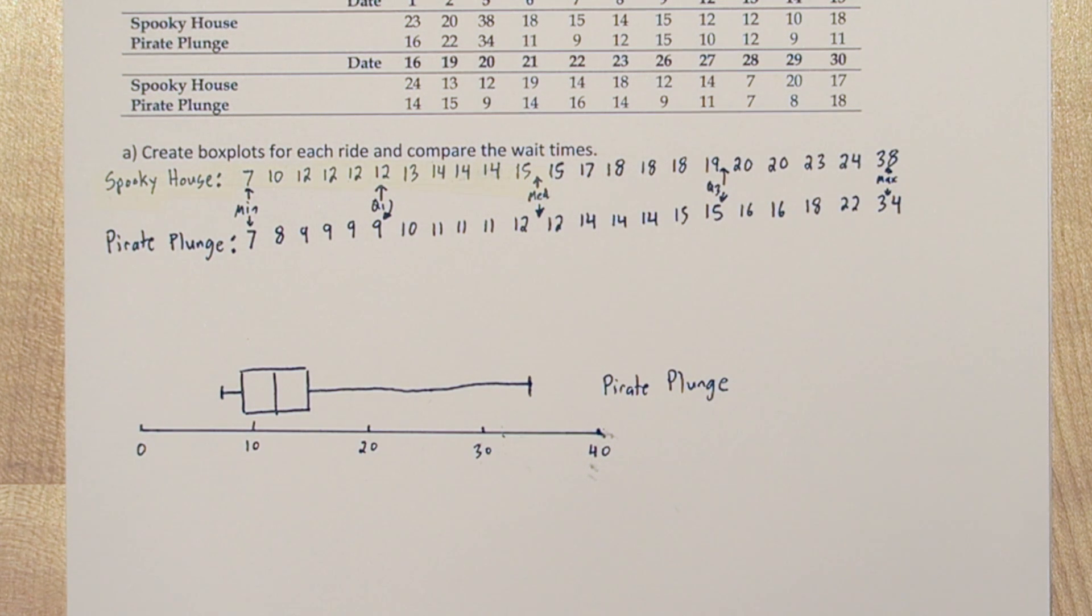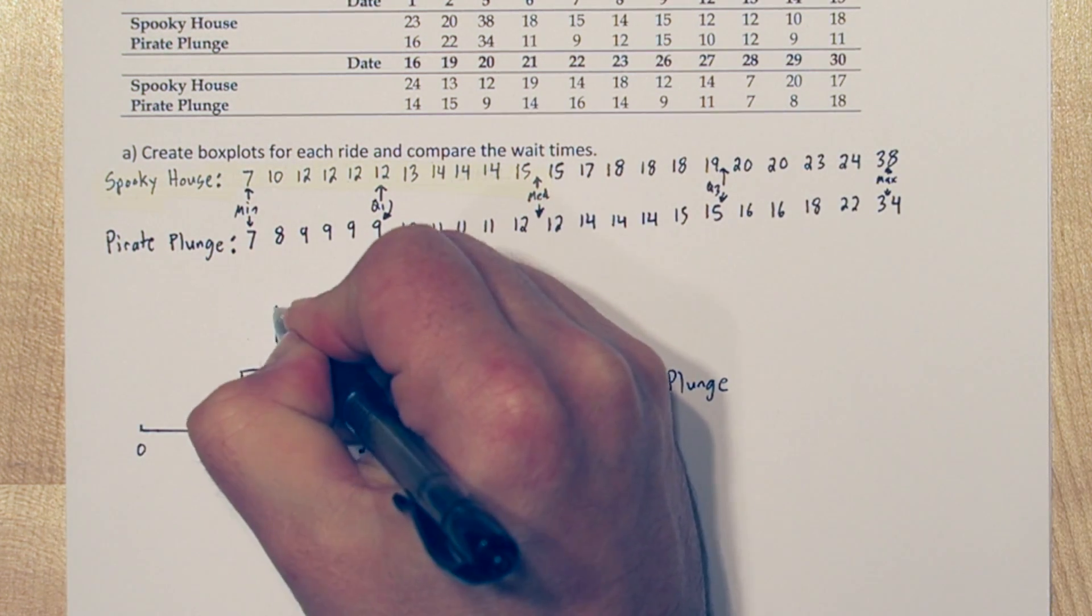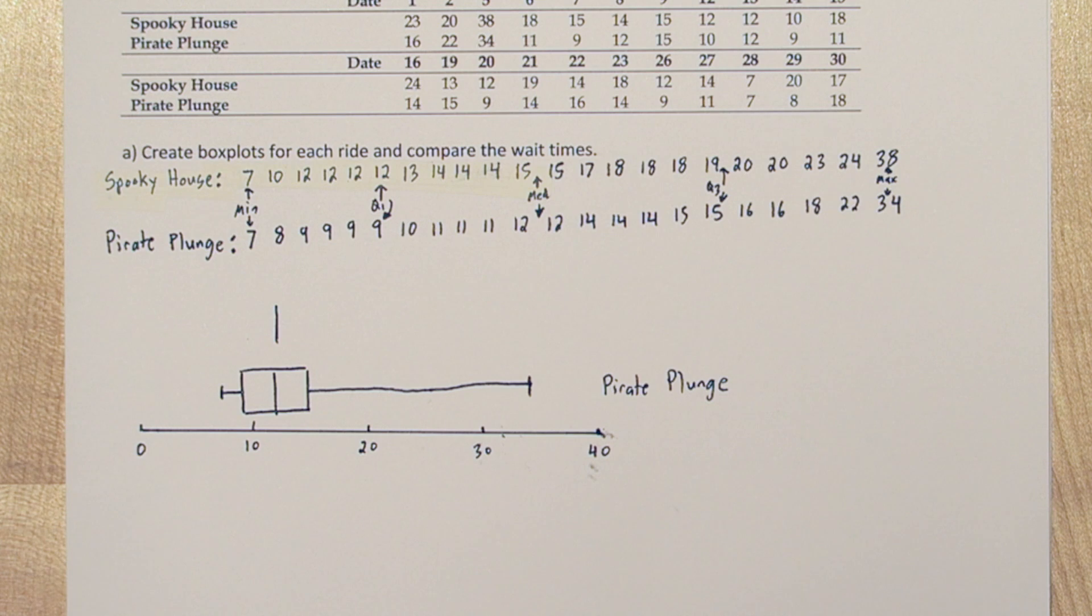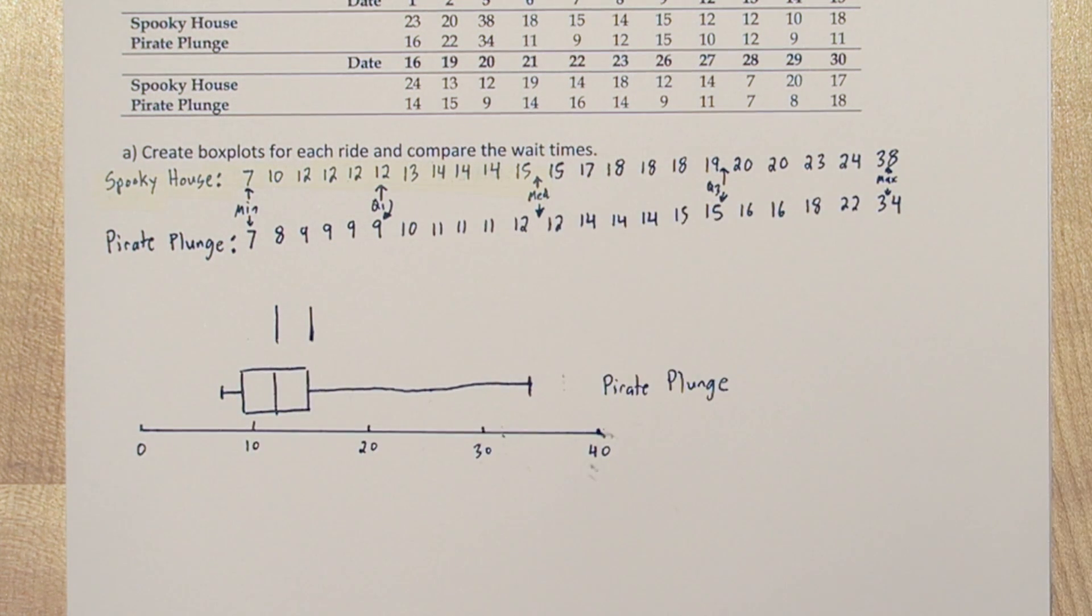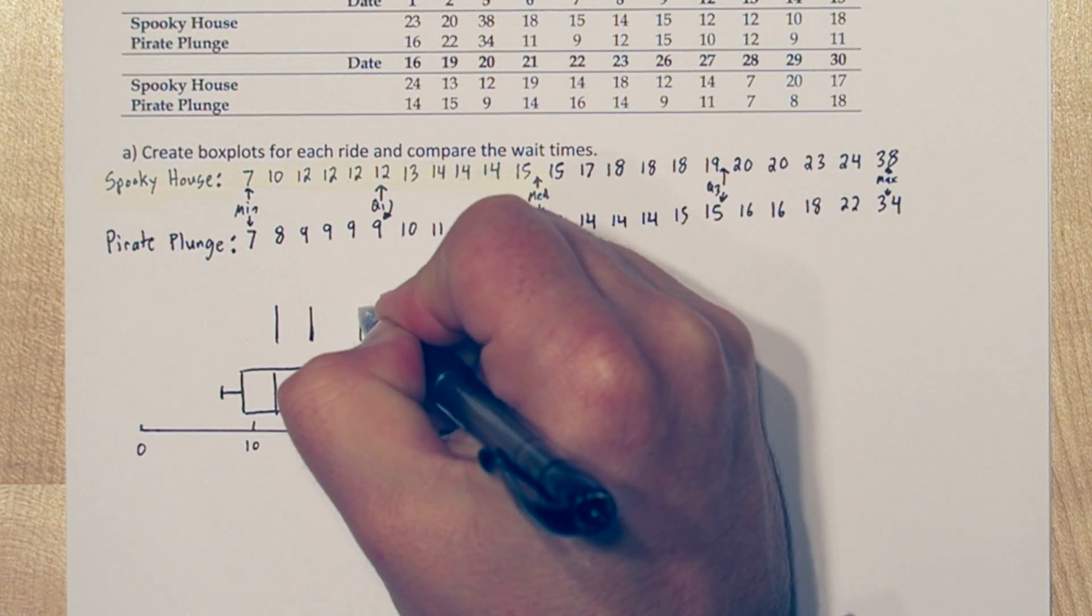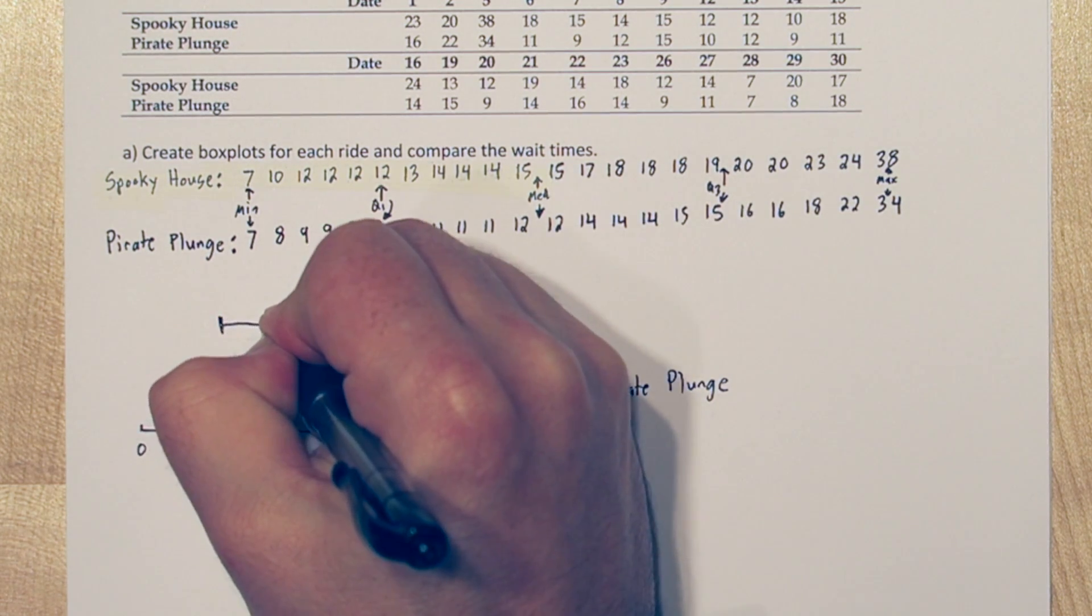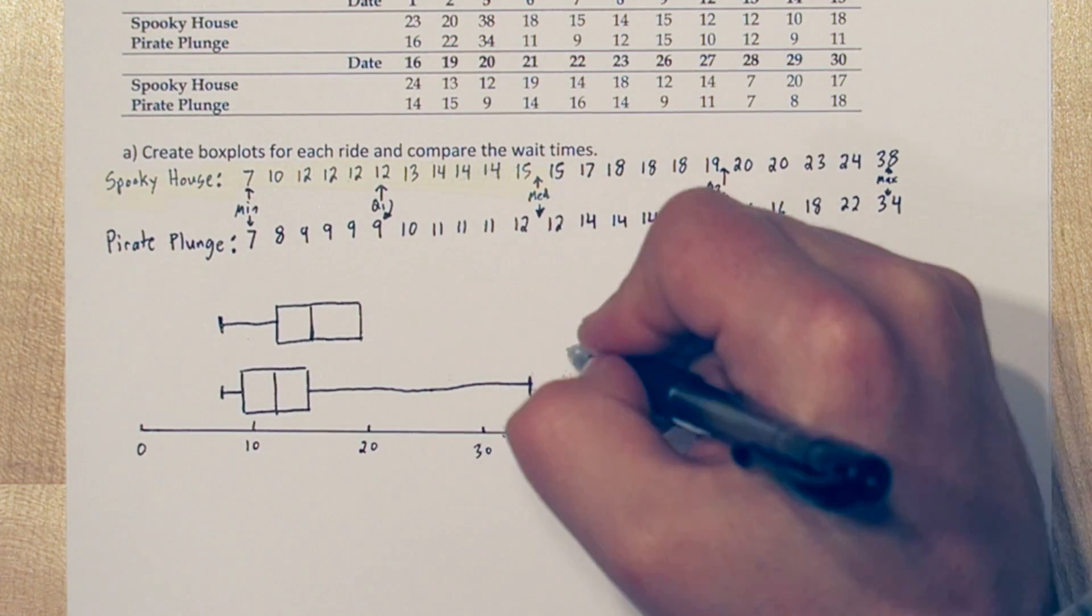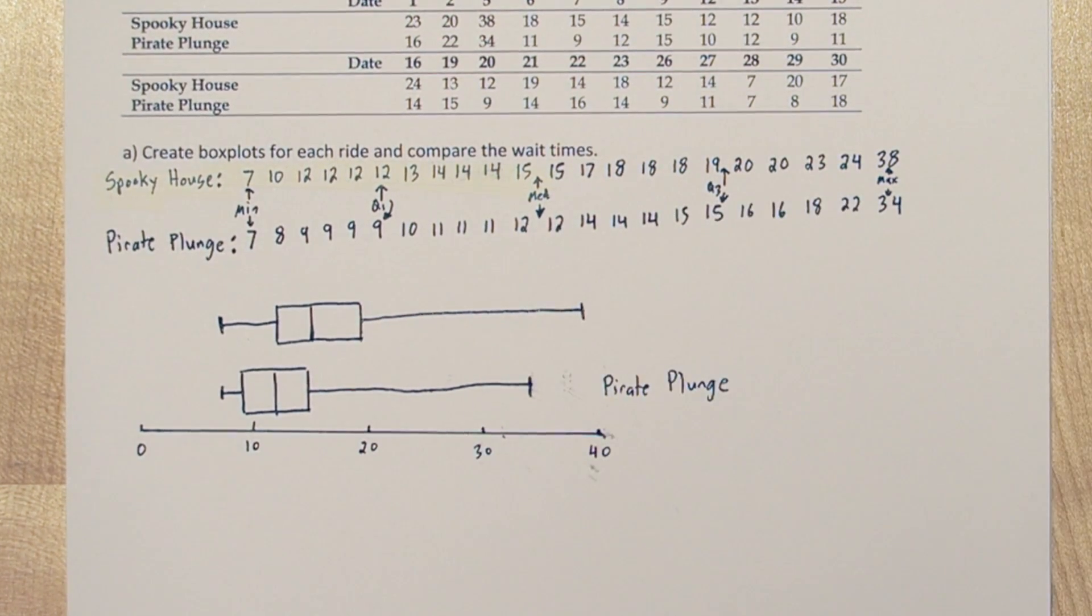Now let's do one for spooky house. So we'll start with quartile 1, median, and quartile 3 again. Quartile 1 is 12 in this case, which matches the median of Pirate Plunge. The median is 15, which matches quartile 3 of spooky house. And quartile 3 is 19. The minimum waiting time is again 7, and the maximum waiting time is 38. Now these are box plots, but what we're going to draw is actually modified box plots.